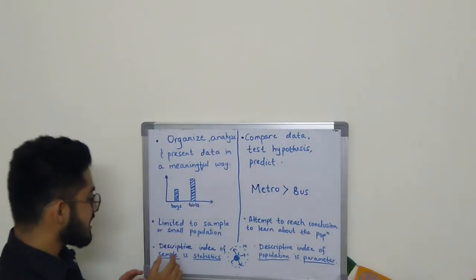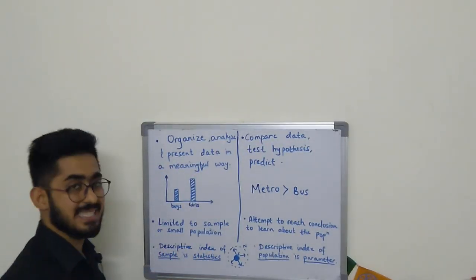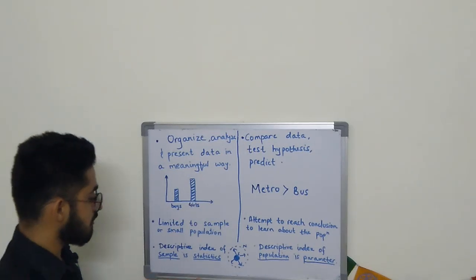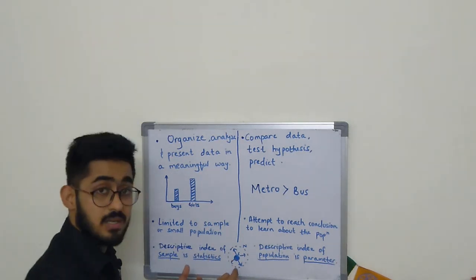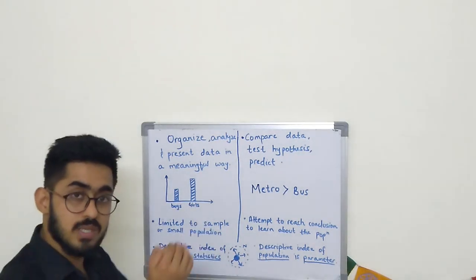Next point: the descriptive index of a sample is called statistics. Here are two main points—sample and statistics. Descriptive index means the measures of a sample, a small chunk for which we have data.